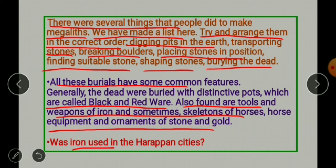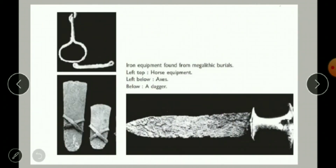Iron was not used in the Harappan cities we discussed in the previous chapter. Here you can see the picture of iron equipment found from megalithic burials. On the left you can see horse equipment, below left are axes, and below is a dagger made of iron.